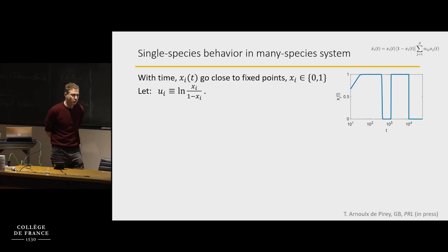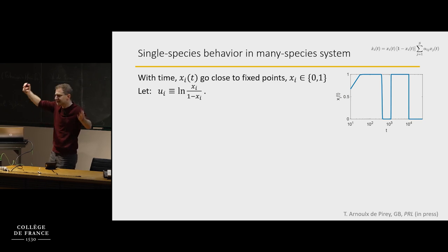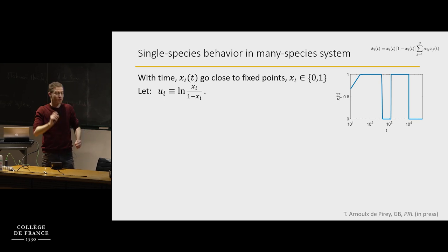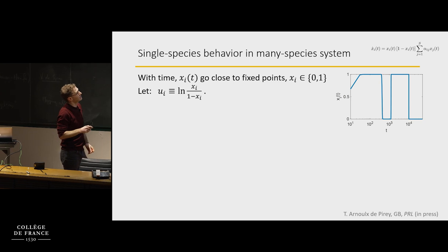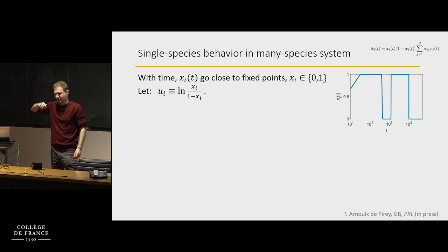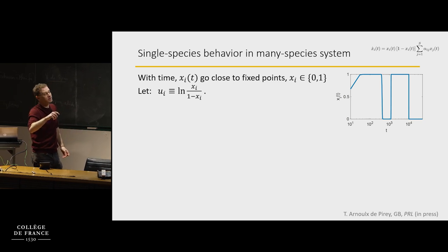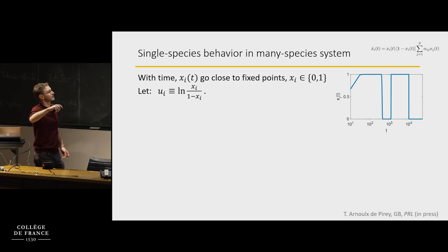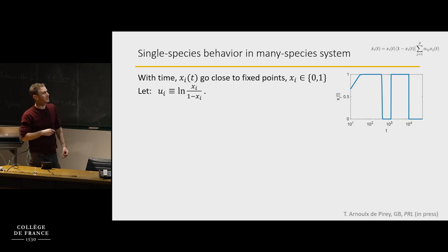You run the dynamics and look at what happens to one species within a large system — 500 variables all running together and interacting, but just looking at one of them. At initial times it does something, but quite quickly it reaches either 0 or 1. It stays close to 1 for some time, then quickly switches to 0, and then at later times quickly switches back — basically doing something that looks very close to a binary process going between 0 and 1.